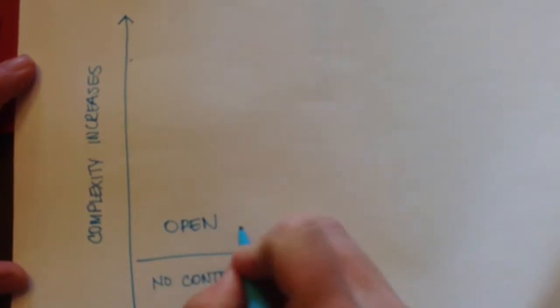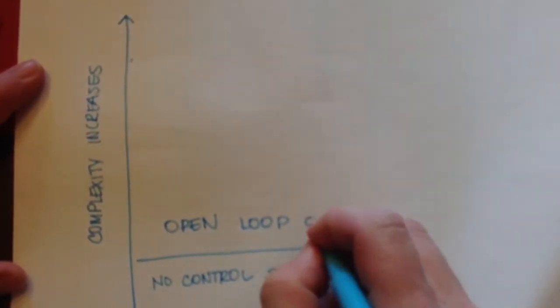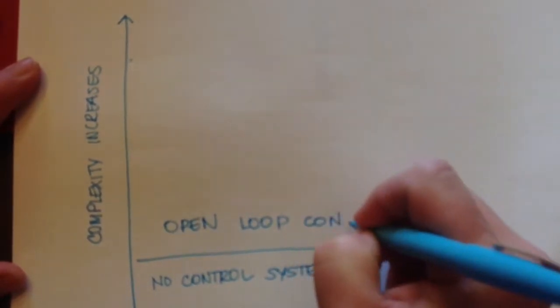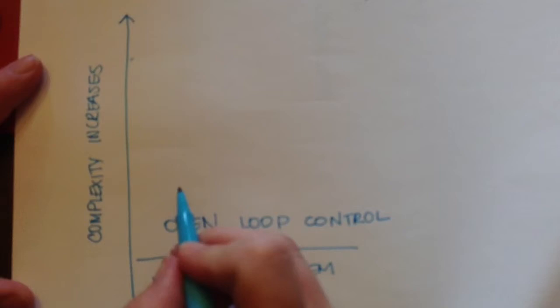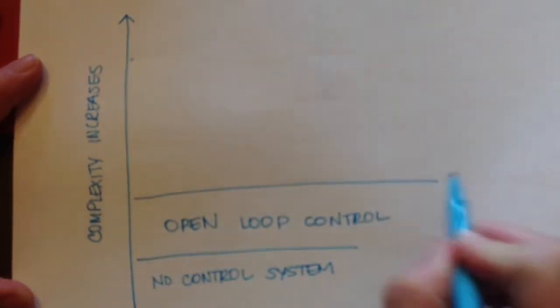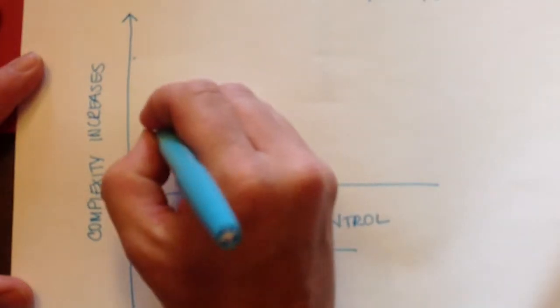We would have the first thing as we started at the bottom would be no control system. Then as we moved up, the next layer would be open loop.